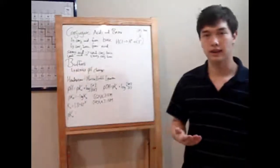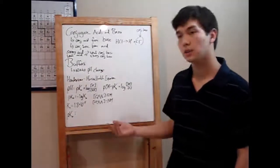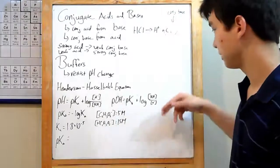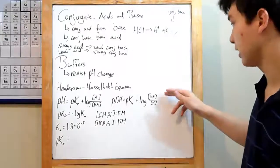There's another version of the Henderson-Hasselbalch if you want to calculate your pOH. That's equivalent to pKb plus the log of, this time, flip it over, HA over A minus.